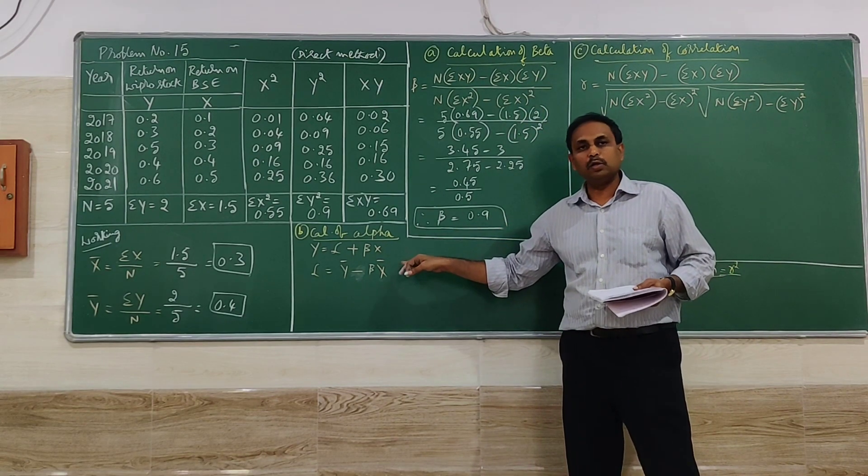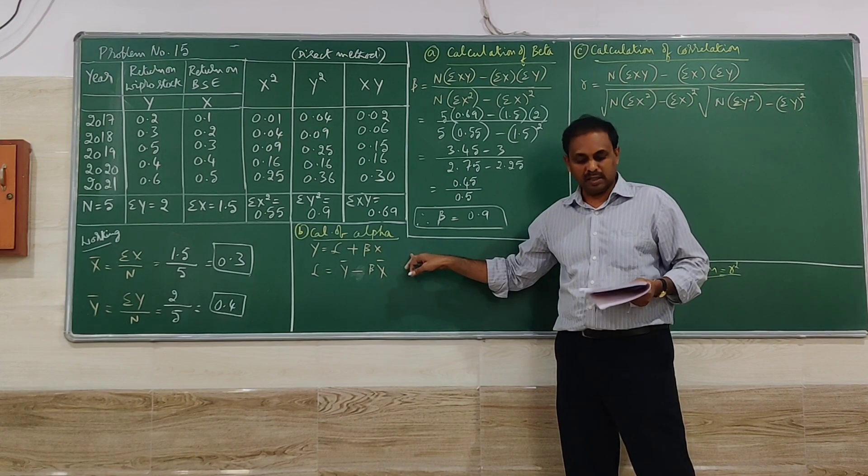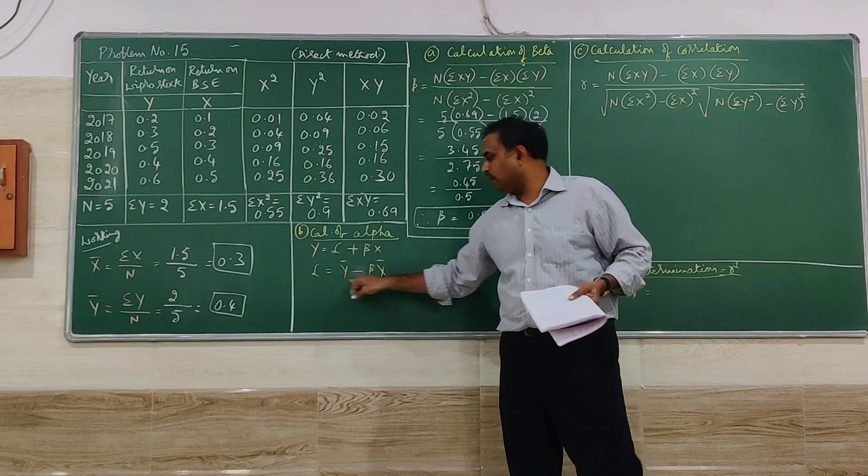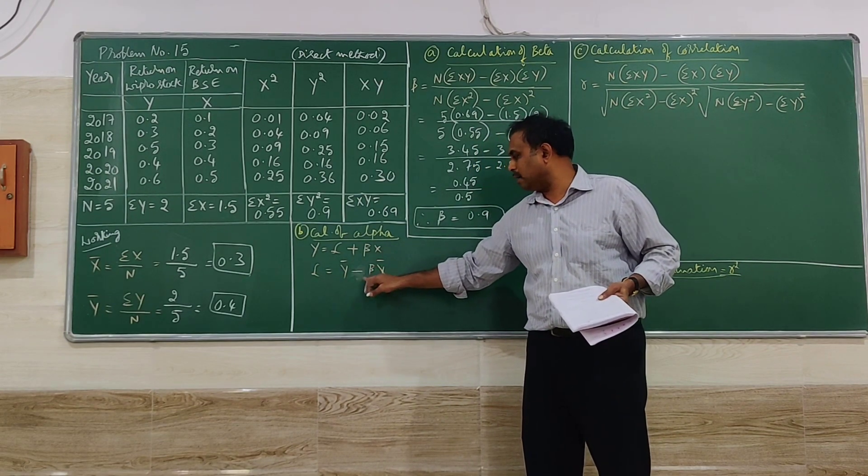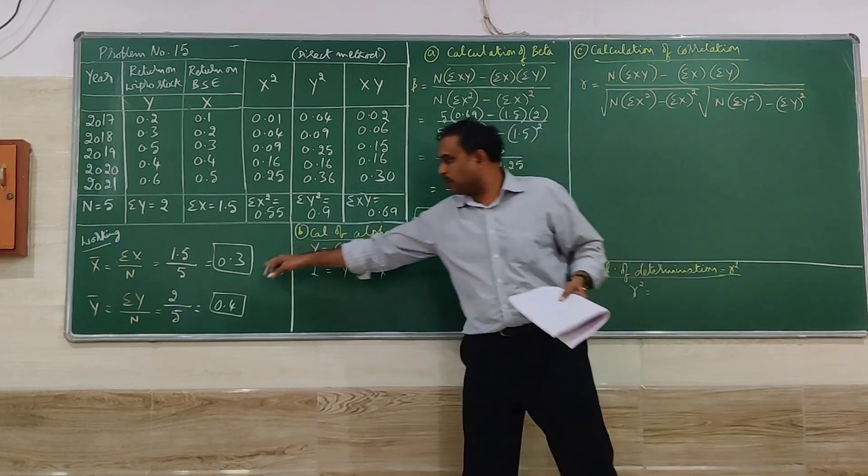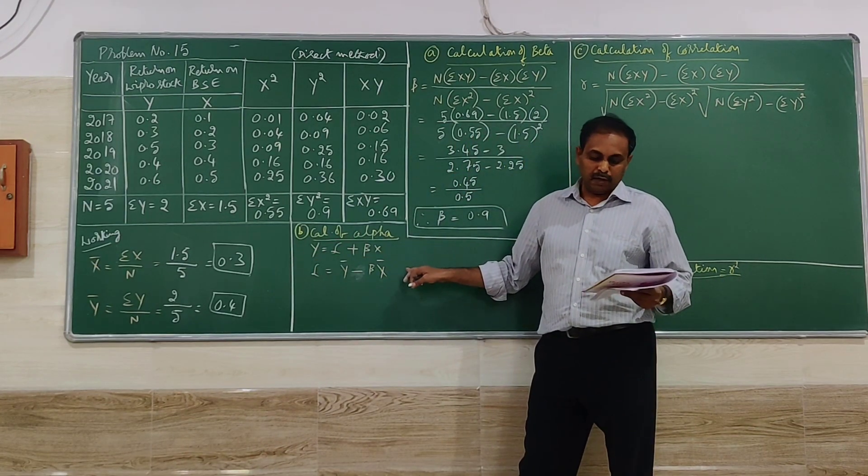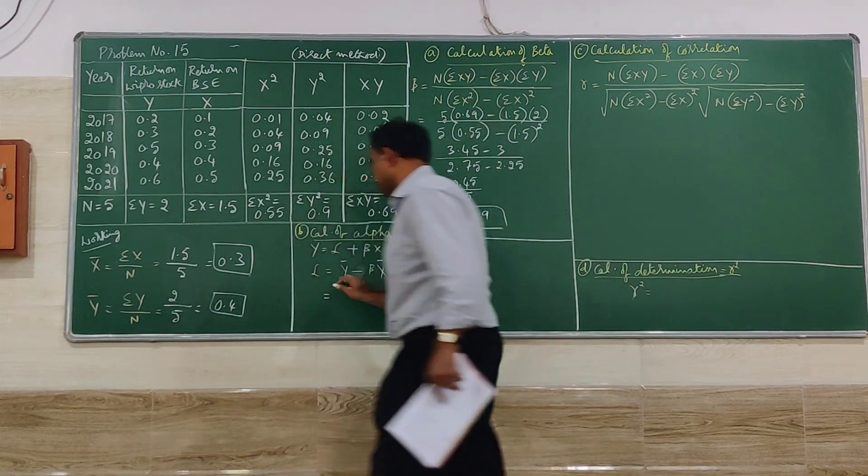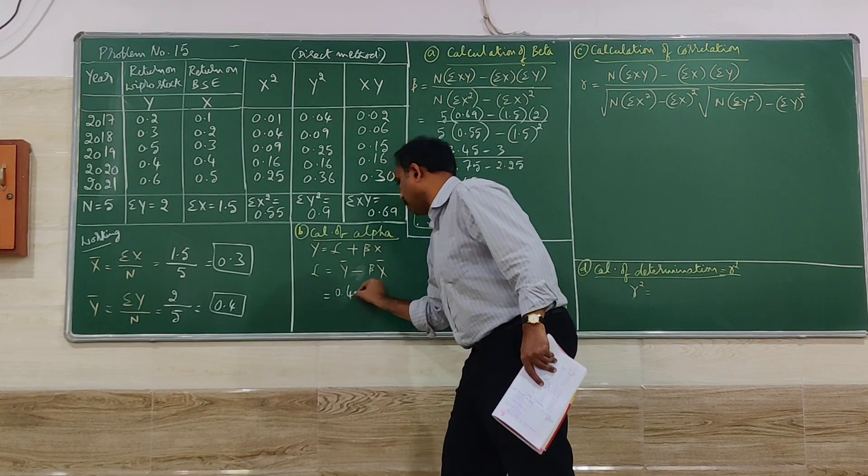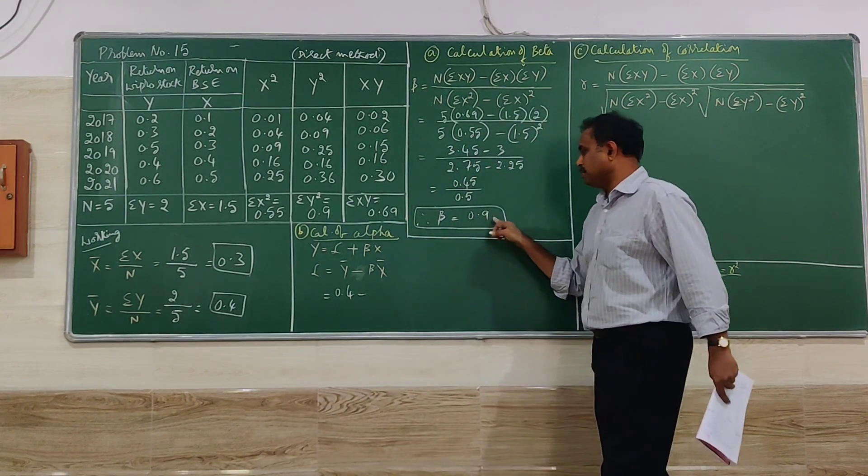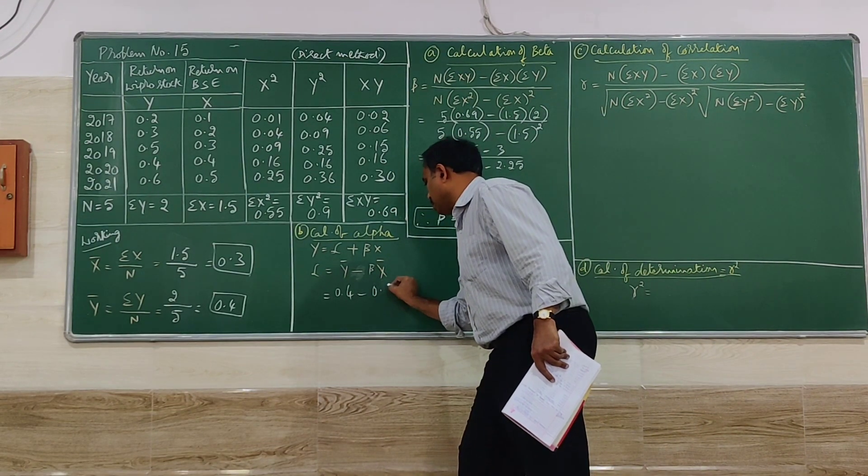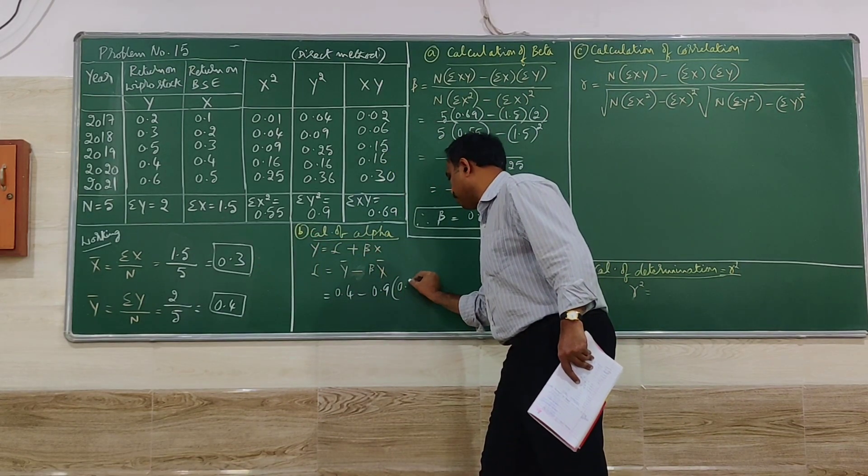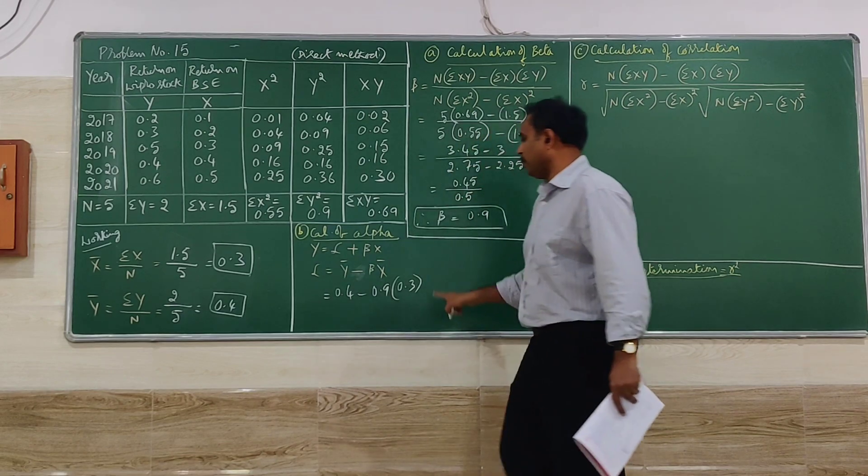Then moving on to calculation of alpha, the second question. So I have simplified the equation. Alpha is equal to Y bar minus beta into X bar. So this working will be helpful for calculation of alpha. So let me substitute Y bar 0.4 minus beta 0.9 into X bar 0.3.